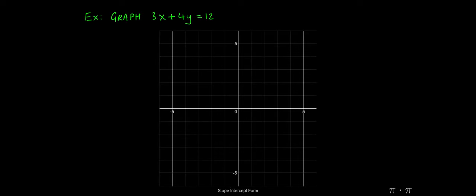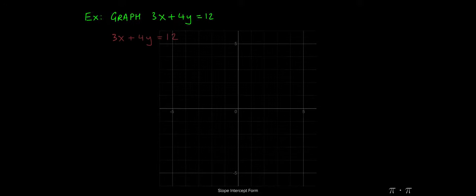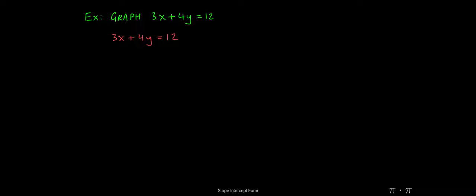Let's say we're asked to graph 3x plus 4y equals 12. We start by recognizing that this equation is not in slope intercept form, so our first task is to get it there.